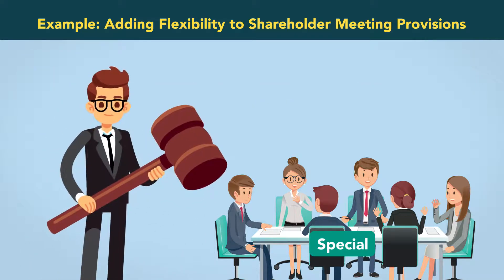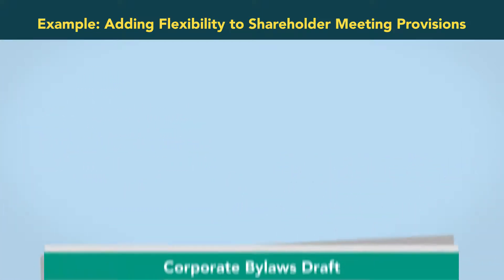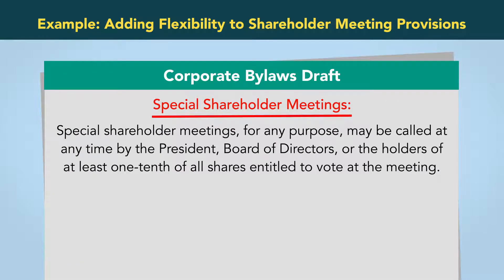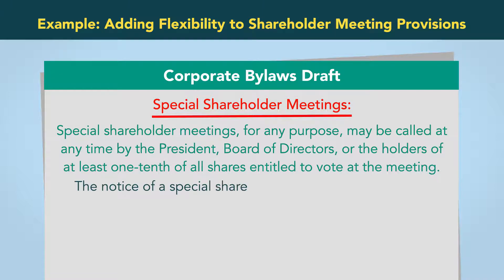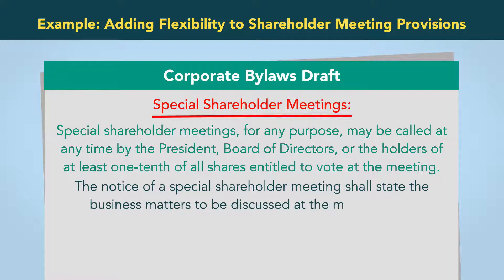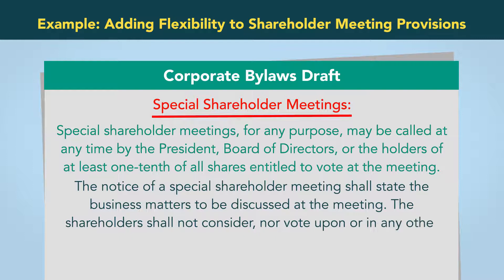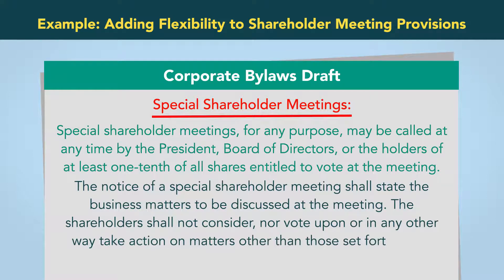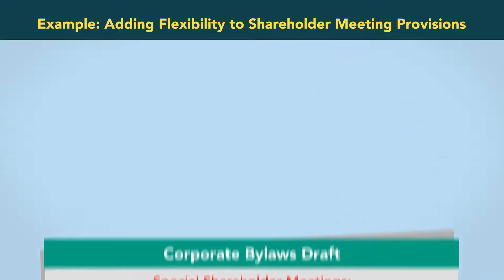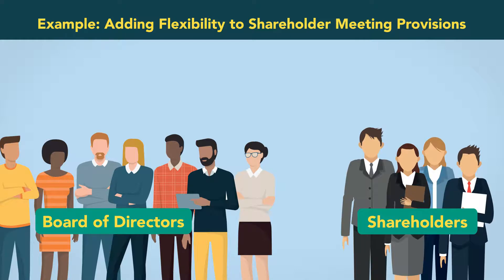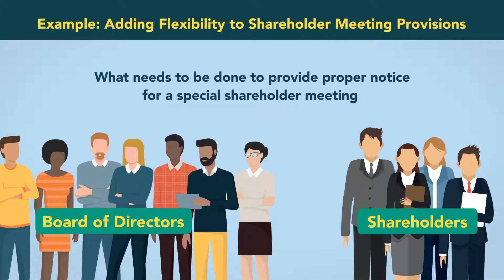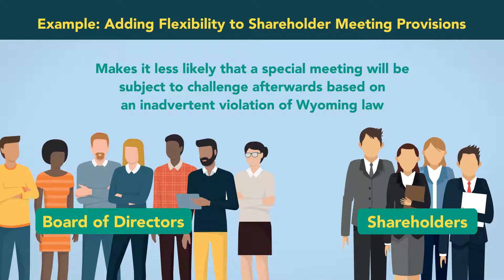This could result in challenges to actions taken by the shareholders in a special meeting. The drafters can minimize the possibility of a special meeting going beyond its authorized boundaries by making a simple addition to the template: "Special shareholder meetings, for any purpose, may be called at any time by the president, board of directors, or the holders of at least one tenth of all shares entitled to vote at the meeting. The notice of special shareholder meeting shall state the business matters to be discussed at the meeting. The shareholders shall not consider, nor vote upon, or in any other way take action on matters other than those set forth in the special meeting notice." The revised text makes it clear for both the board of directors and the shareholders what needs to be done to provide proper notice for a special shareholder meeting, and makes it less likely that a special meeting will be subject to challenges afterwards based on inadvertent violation of Wyoming law.